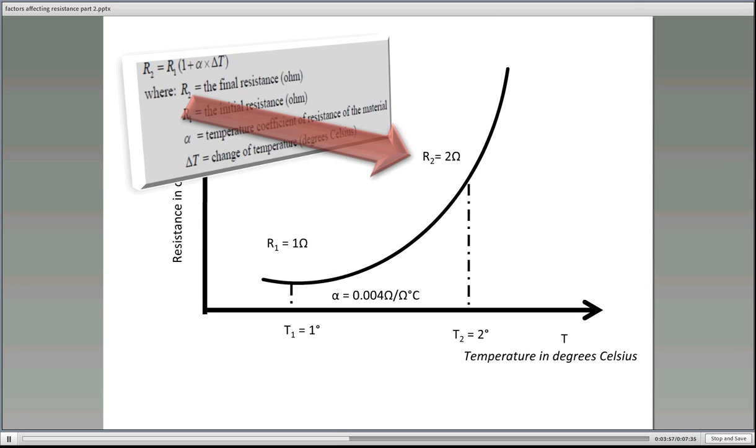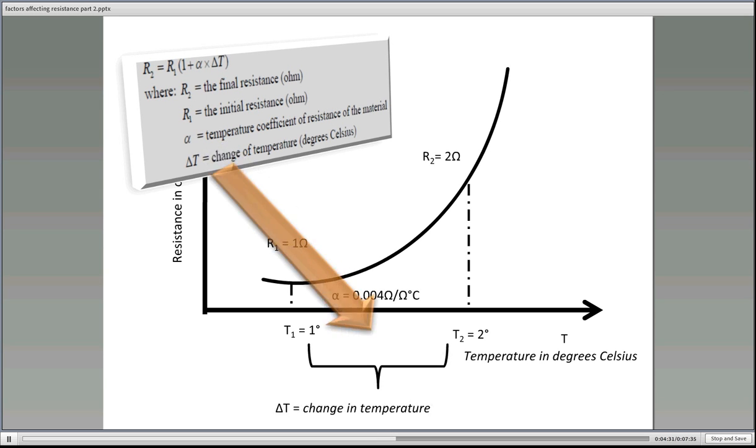Now there's an equation to represent this and to work out the temperature as it goes up. And it's R2 equals R1 in brackets one plus alpha delta T. Now you may see R hot for R2 and R1 for R cold. So let's start off here. R2 is the final resistance in ohms. R1 is the initial resistance or the cold resistance in ohms. The alpha is the temperature coefficient of resistance of the material, the 0.004 ohms per ohm per degrees Celsius. And delta T is a change in temperature.